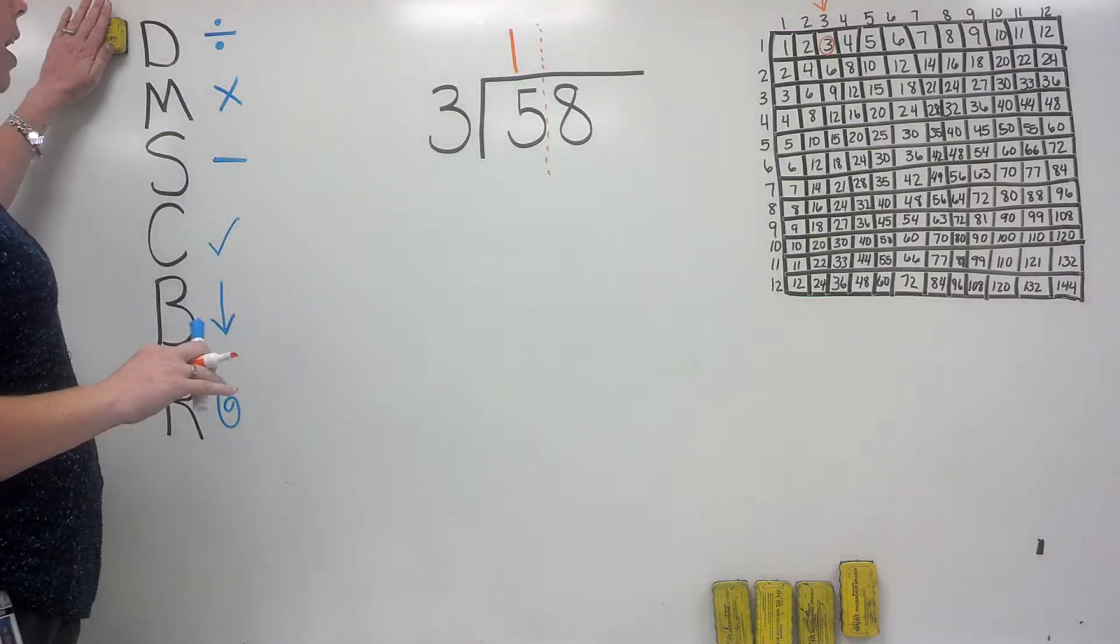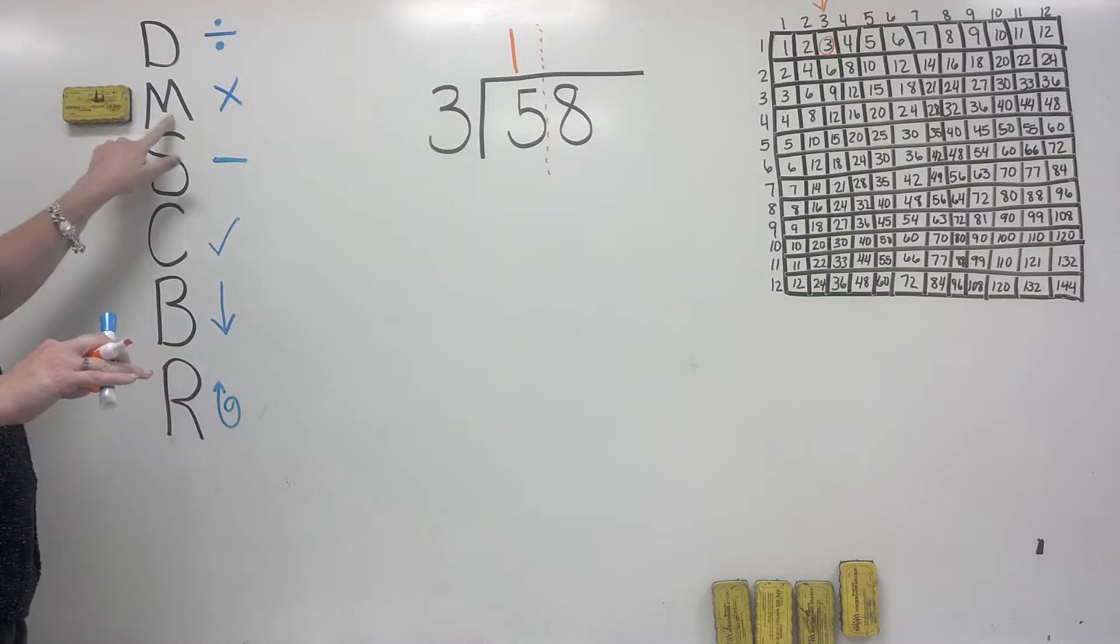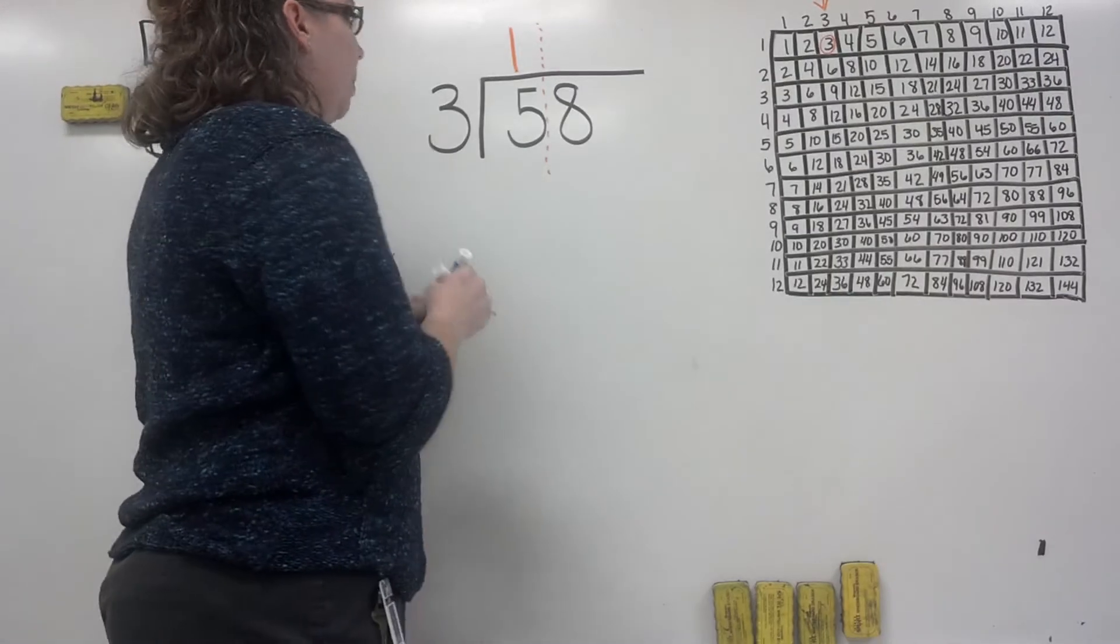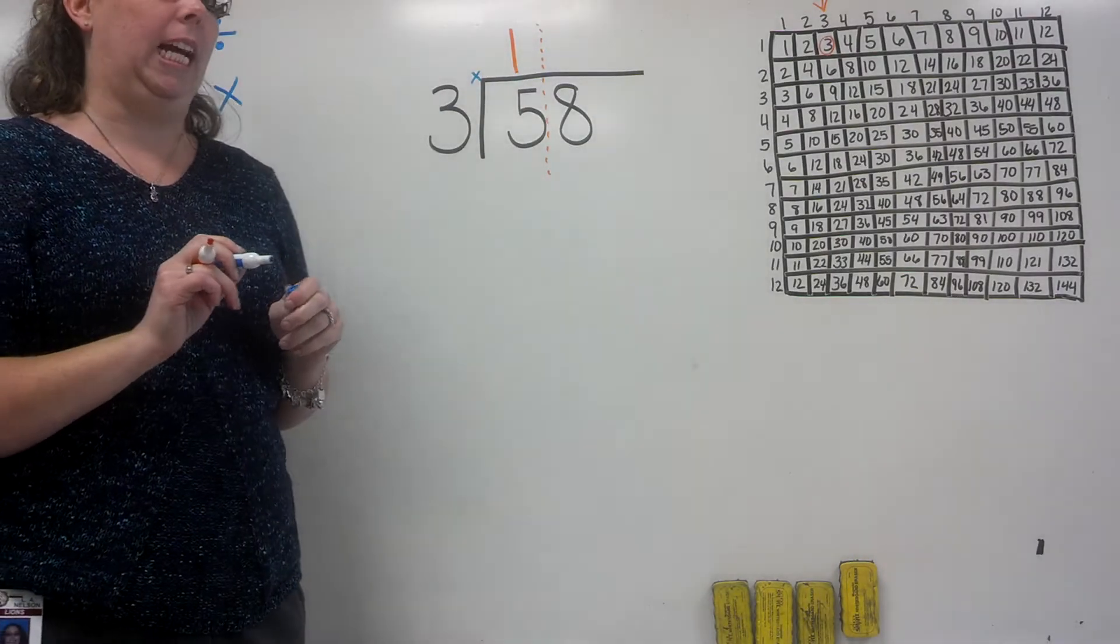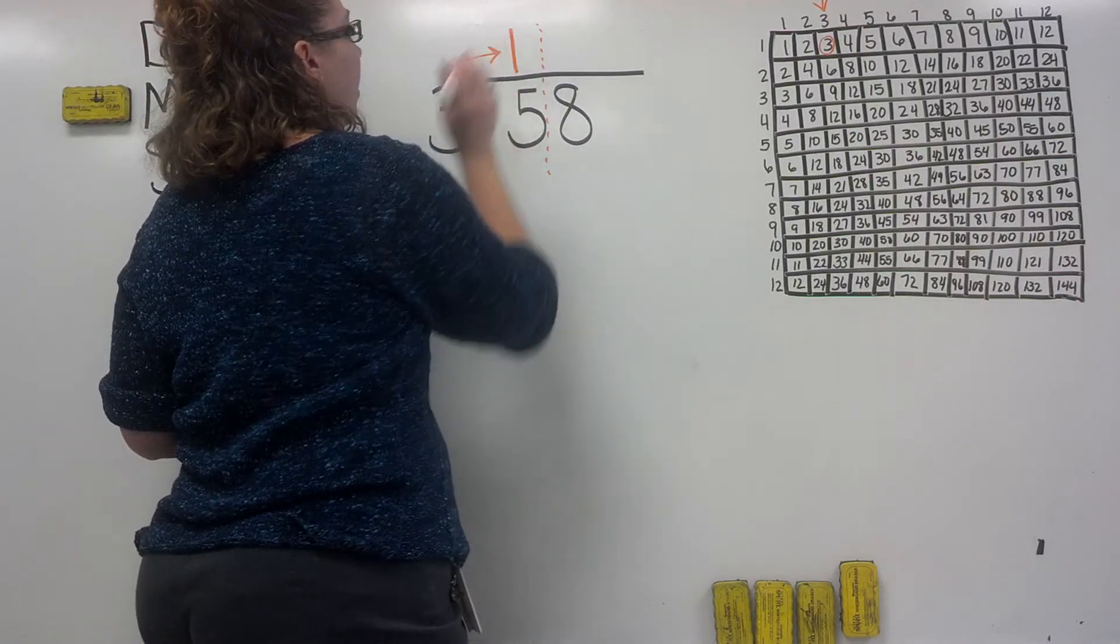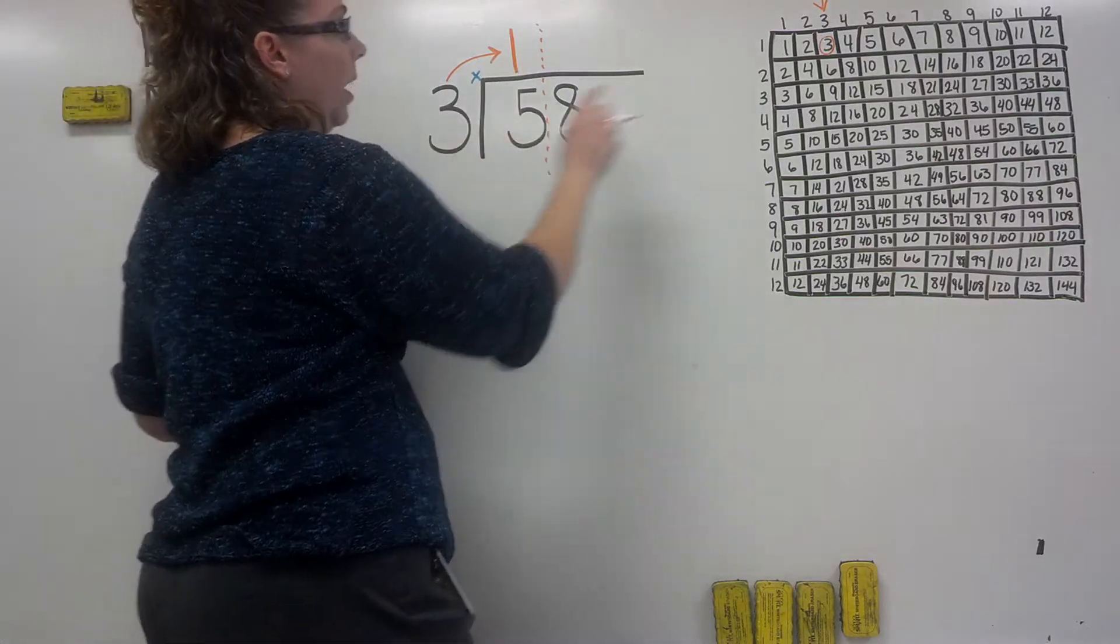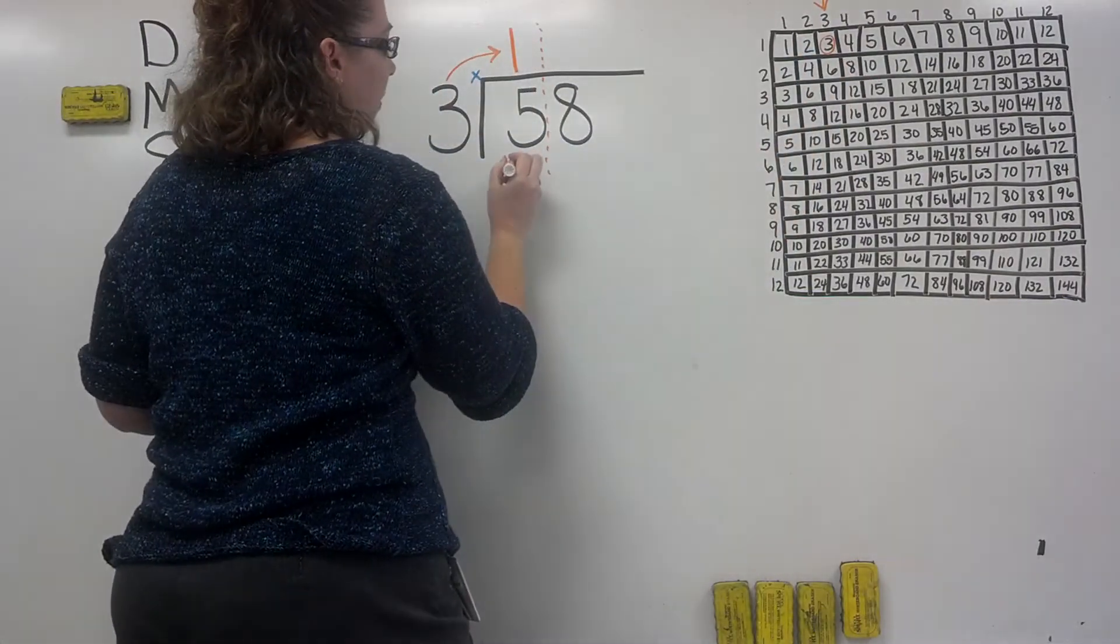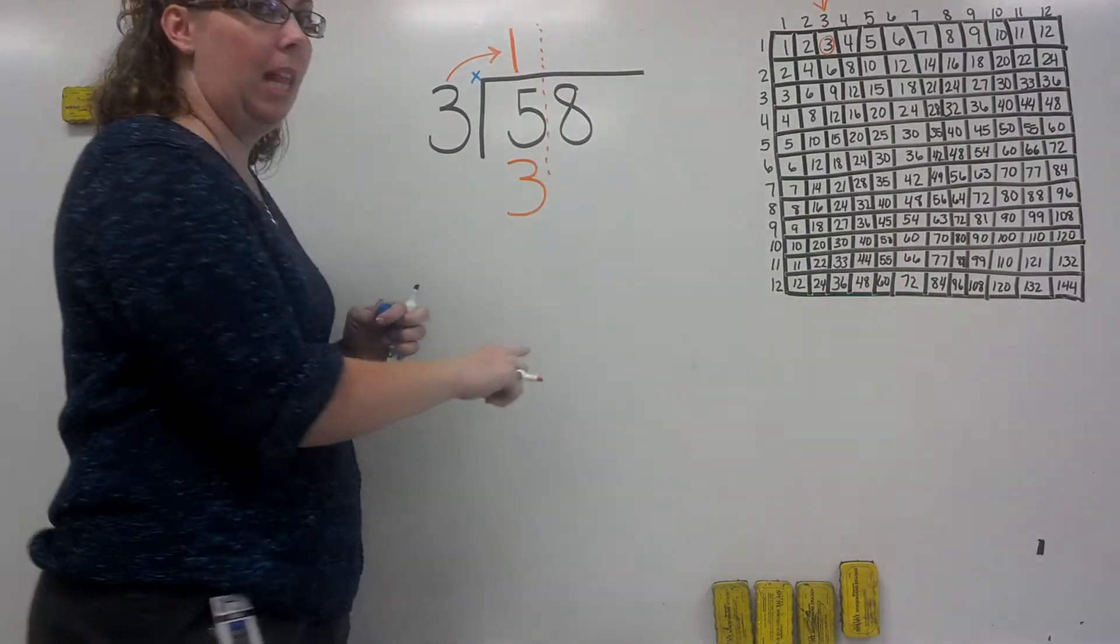We've done the division part of our problem. The next step is multiplication. We're going to multiply 3 times 1. You can use your chart again: 3 times 1 is 3. Write it right here under the 5. Remember we're keeping them all in the same line.